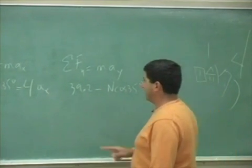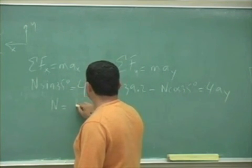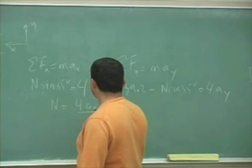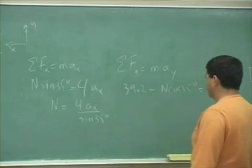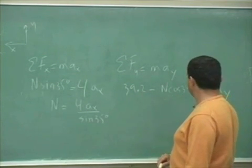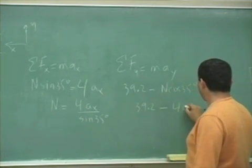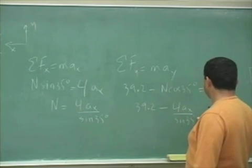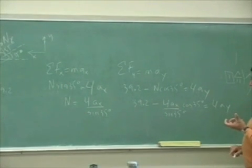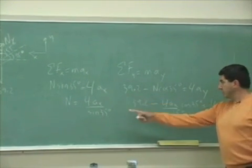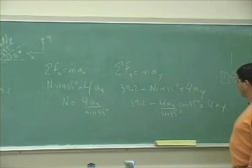Okay, so how can I solve this now? Well, I can say here n is equal to 4a_x over sine of 35. And I could substitute that into that n. 39.2 minus 4a_x, so I substituted, I solve for n in that equation. I substituted it for the n in this equation. And I have 4a_x cosine 35 over sine 35.